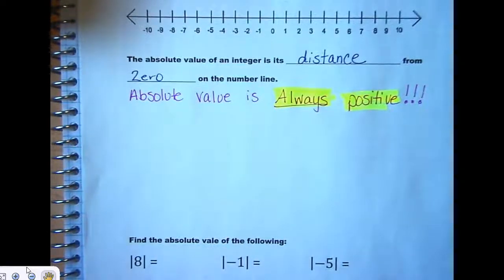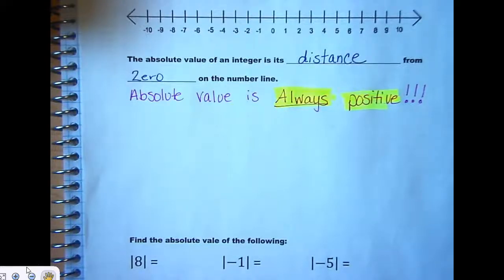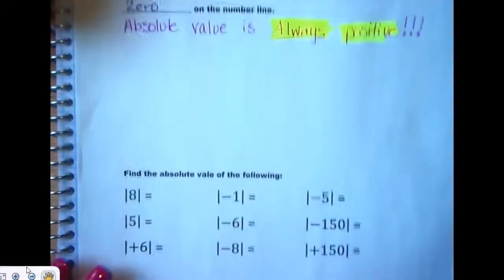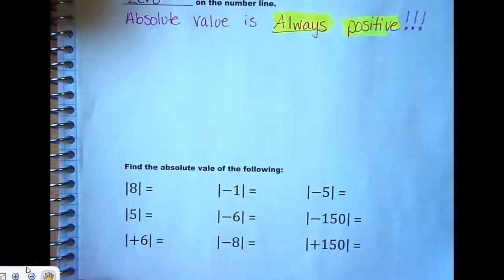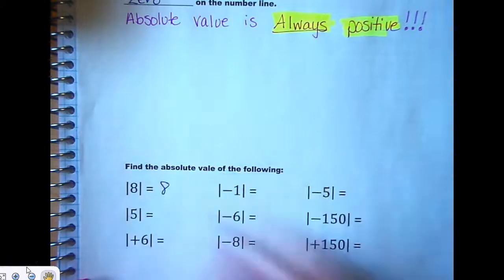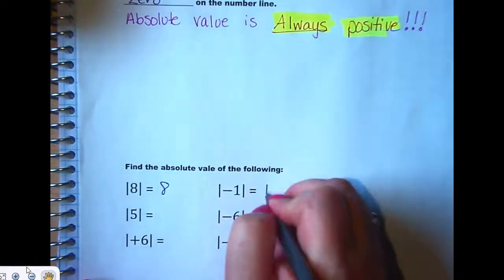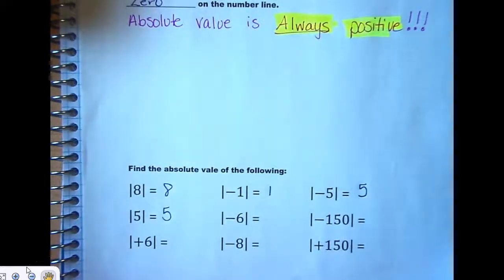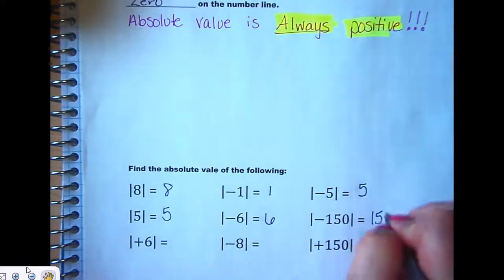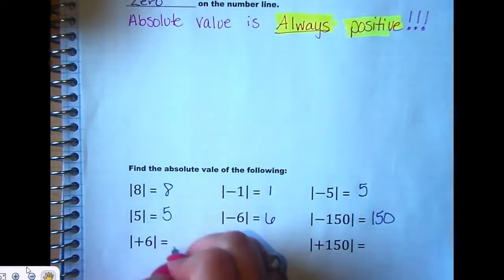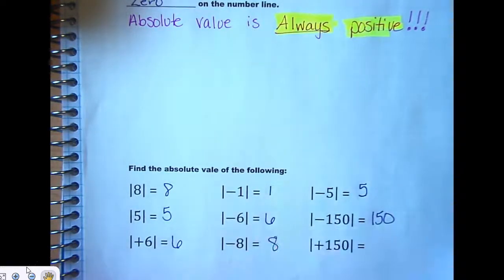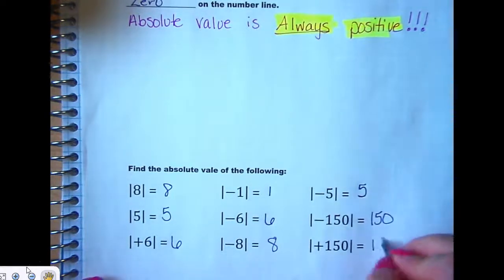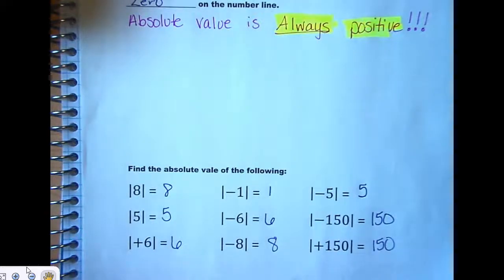We're going to go down here to the bottom, and we're going to find the absolute value of these numbers, and then we're going to try a couple of math problems that use absolute value as a grouping symbol. Down here, what's the absolute value of 8? Just shout it out, 8. Absolute value of negative 1? 1. Absolute value of negative 5? Absolute value of 5? Absolute value of negative 6? Absolute value of negative 150? Absolute value of positive 6? Absolute value of negative 8? And absolute value of positive 150? Very good. Questions about any of those? No. So, pretty easy.